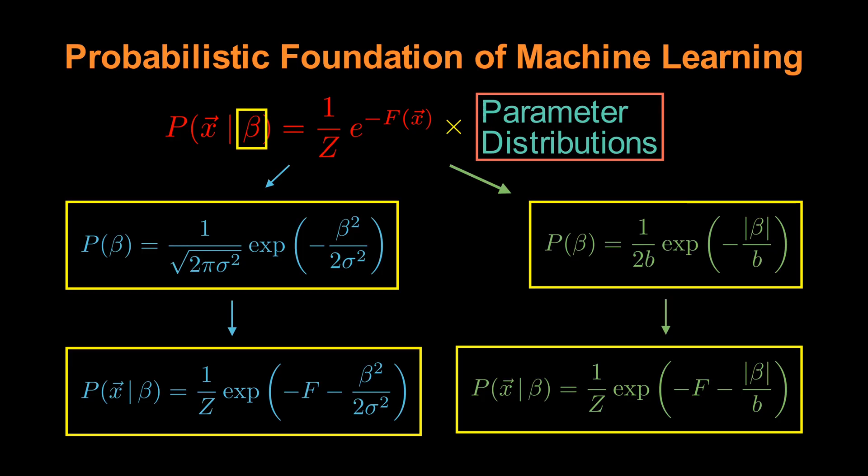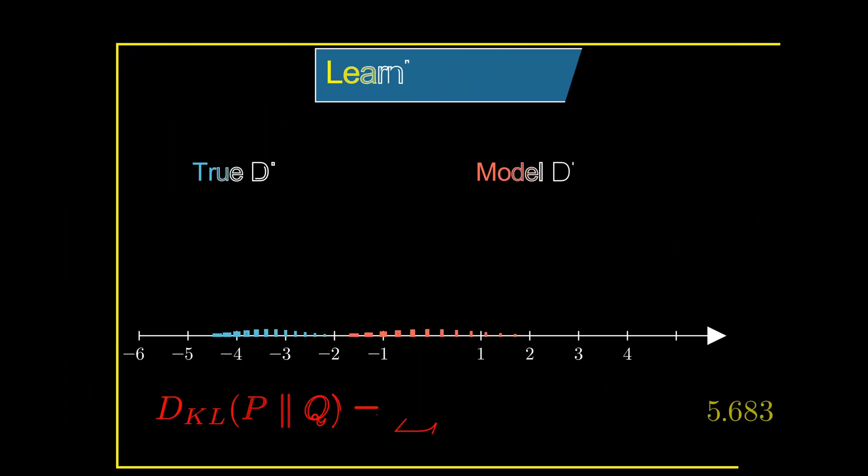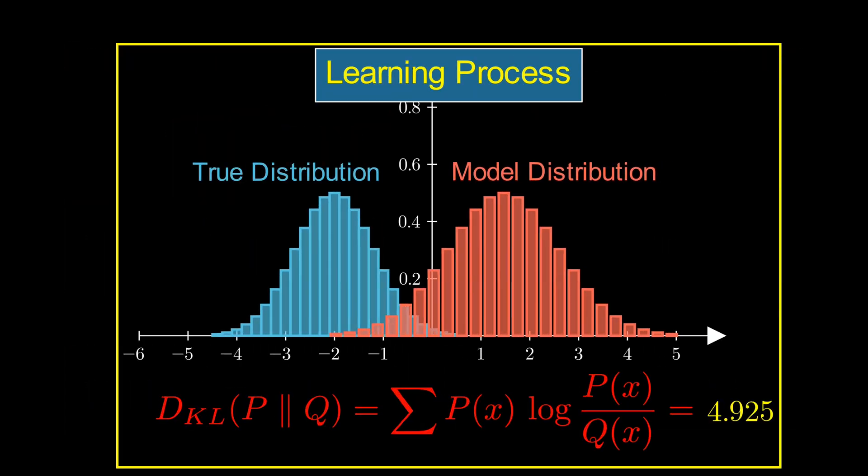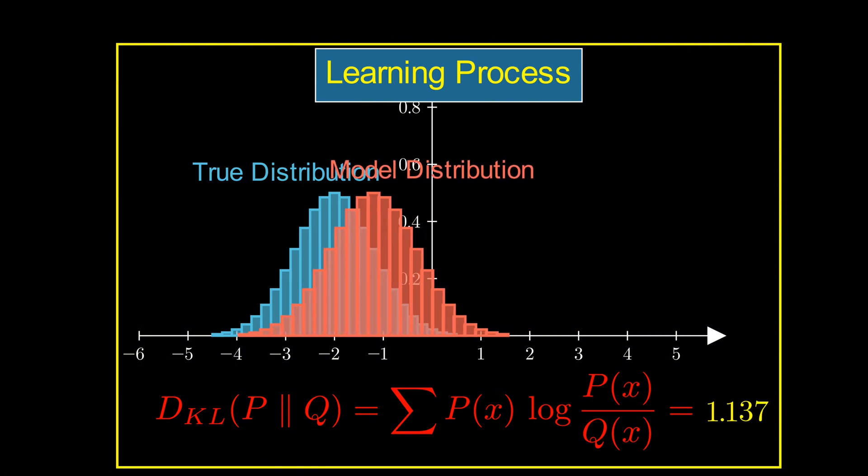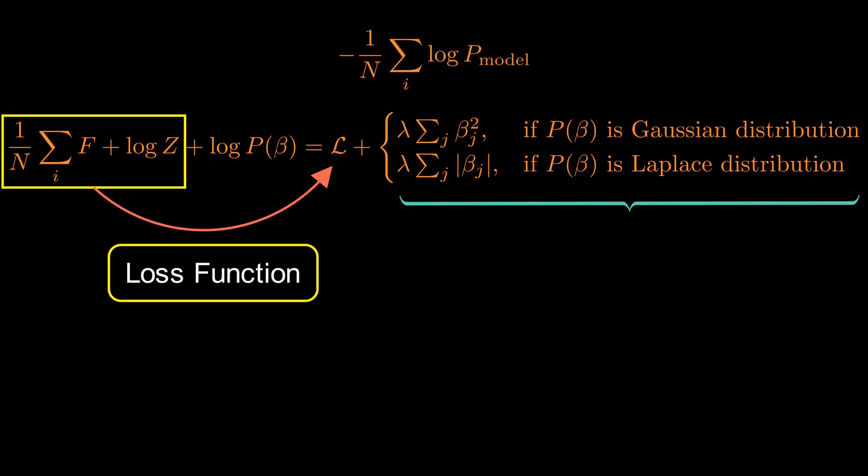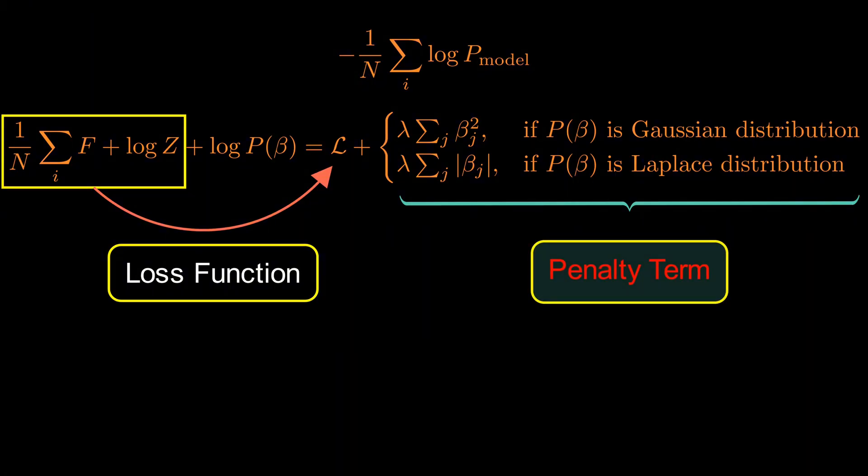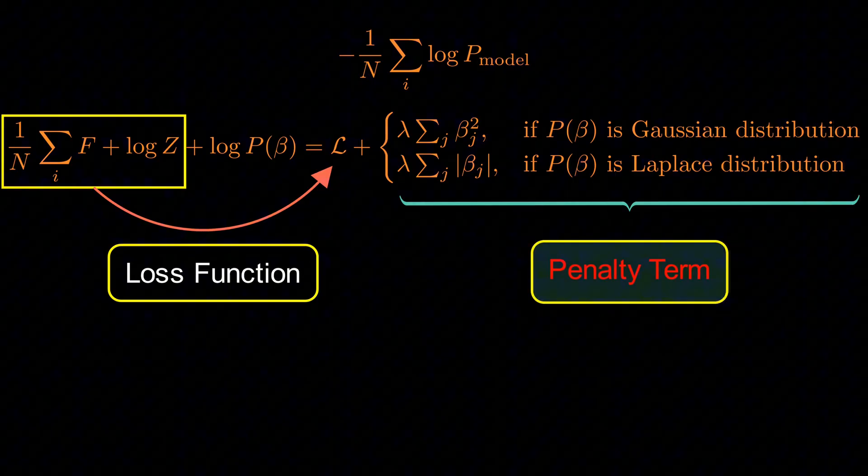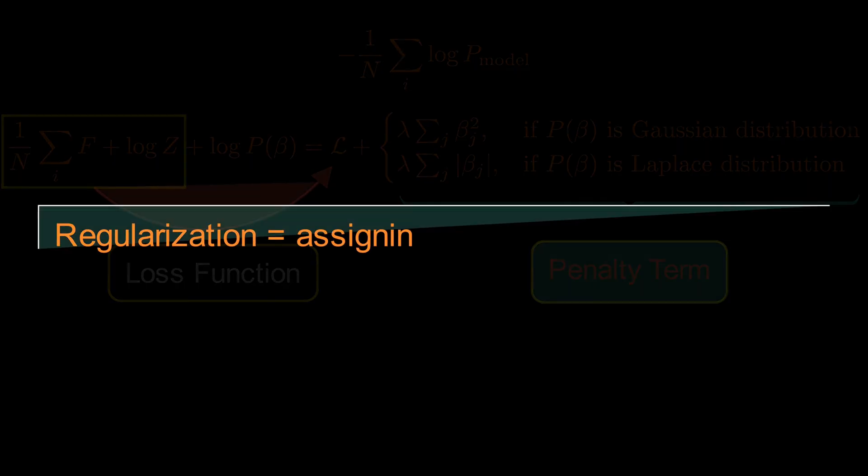Now recall from episodes 2 and 3. The learning process is about minimizing the difference between our model distribution and the true distribution. Mathematically, this means minimizing the following equation, which after expanding gives us. The first two terms form the conventional loss function, which we denote as curly L. The last term is new. It acts as a penalty term, arising naturally from assigning probability distributions to the parameters. That's the key insight.